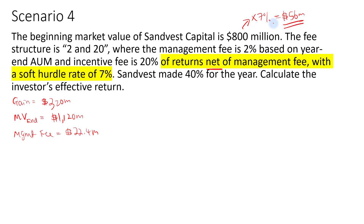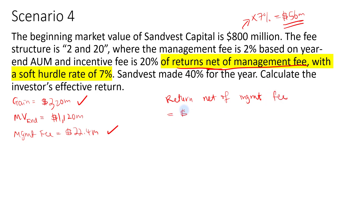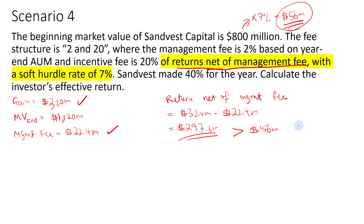For the soft hurdle, we compare the $56 million hurdle against the return net of management fees. The return is $320 million and management fees are $22.4 million, so return net of management fees is $297.6 million. Since this is greater than the hurdle of $56 million, we pay the incentive fee on the entire return. So the incentive fee is 20% multiplied by $297.6 million, which is $59.52 million.